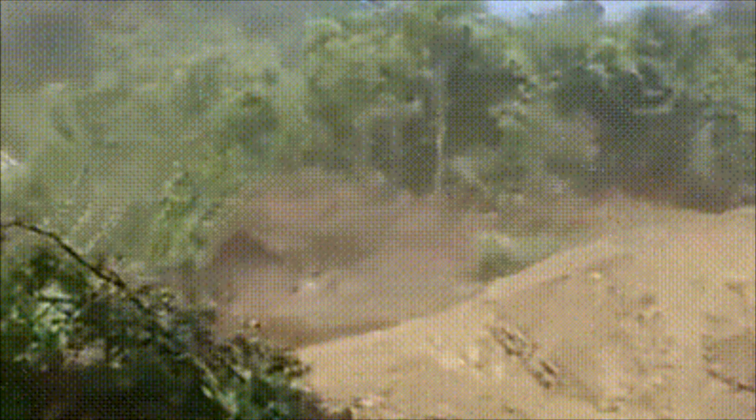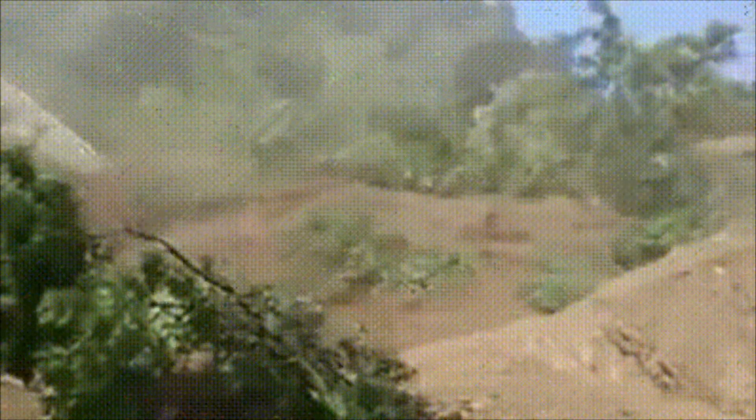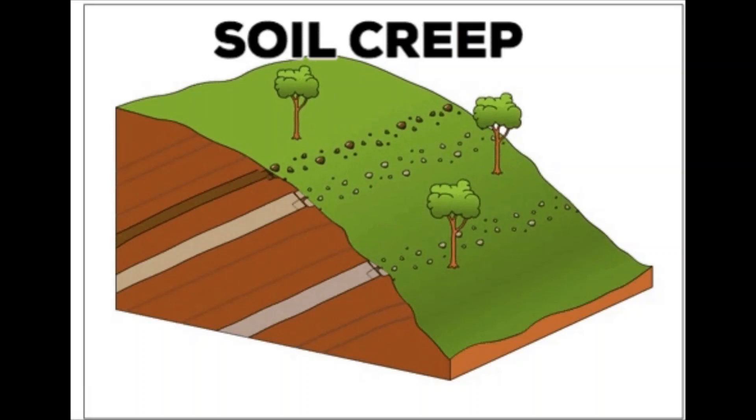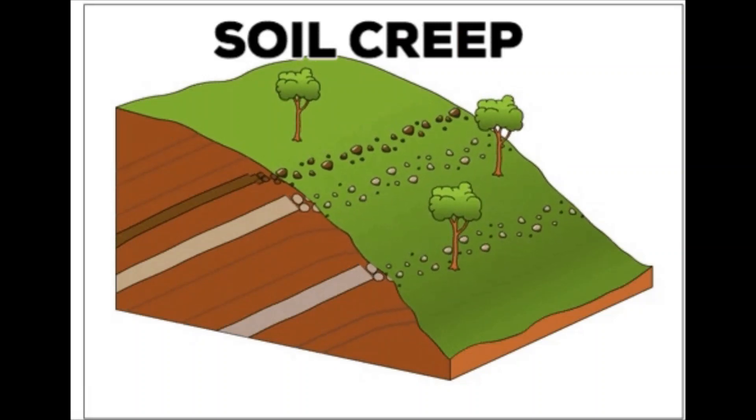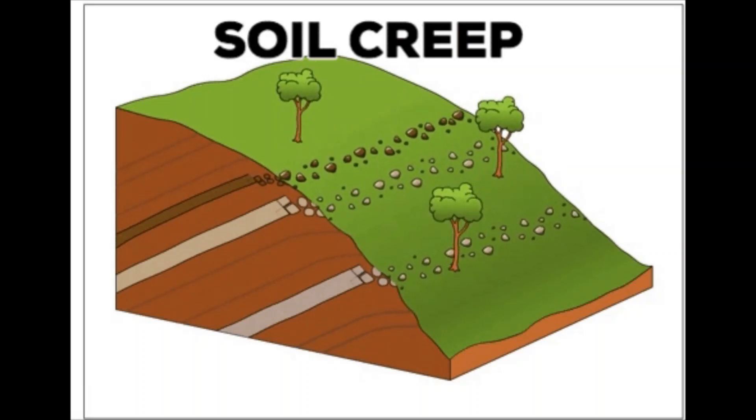Mass wasting, also called mass movement, is the movement of rock material down a slope due to the influence of gravity. There are two types of mass wasting: soil creep and landslide.